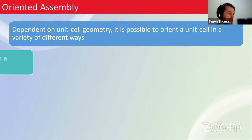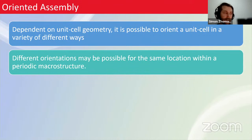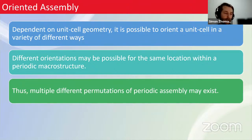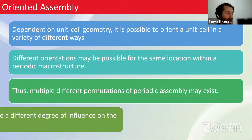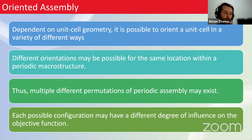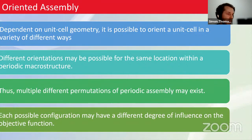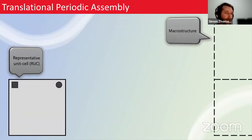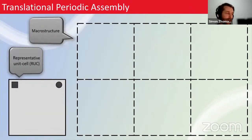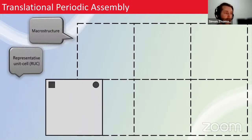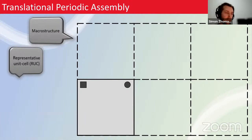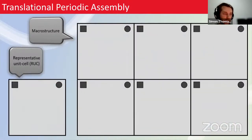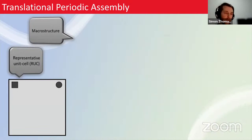We introduce oriented assembly: depending on the unit cell geometry, it may be possible to orient it in a variety of ways. Different orientations may be possible for the same location in the periodic macro structure, so there could be many permutations of structural assembly, each with a different influence on the objective function. In typical translational assembly, all unit cells share the same upright orientation state.